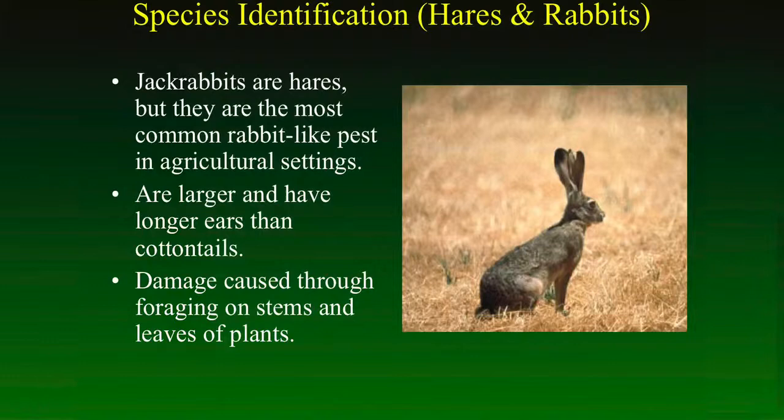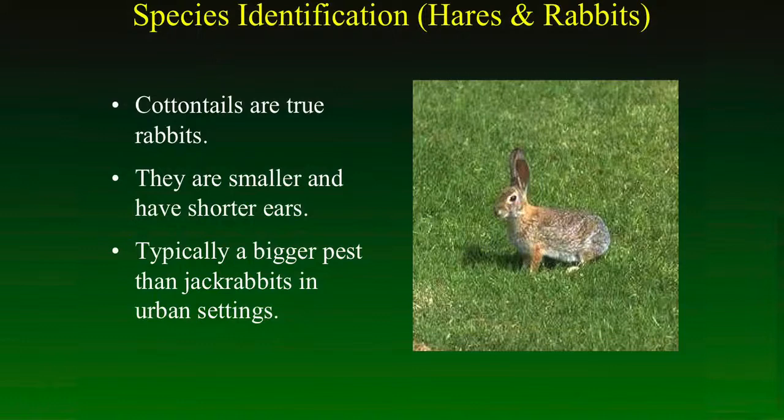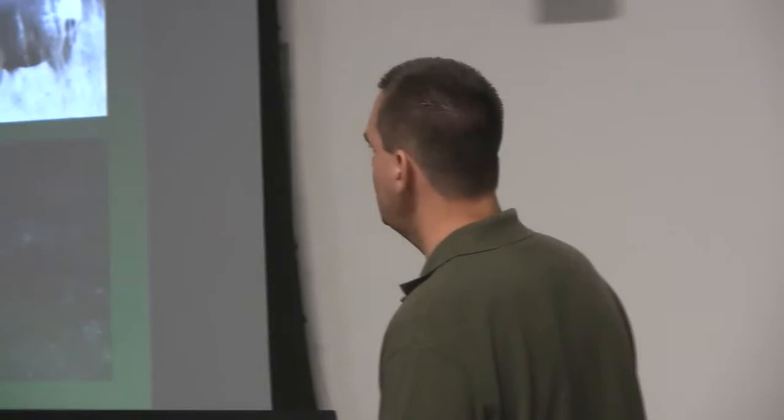Hares and rabbits are certainly problematic. We have jackrabbits and cottontails. Jackrabbits are actually hares. They are not rabbits. Small difference, but important. They are larger than cottontails and they have longer ears. The damage they cause is primarily foraging on stems. They will girdle a young stem. If they're small enough, they'll chew the tops off of them as well. They feed on leaves of plants. These are a more common pest in agricultural areas, areas further away from buildings, et cetera. The cottontails are actually true rabbits. They're smaller and they have shorter ears. And these are more common pests in residential areas, particularly problematic around nurseries, landscape areas, those kinds of situations. They can certainly be damaging in those kinds of areas.